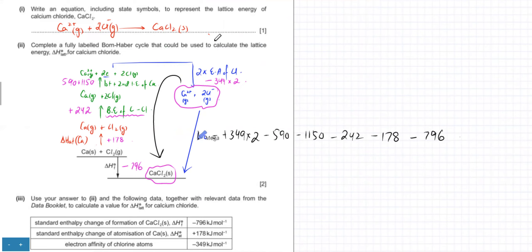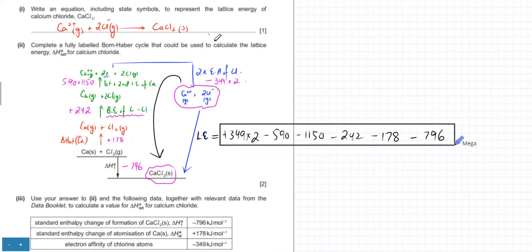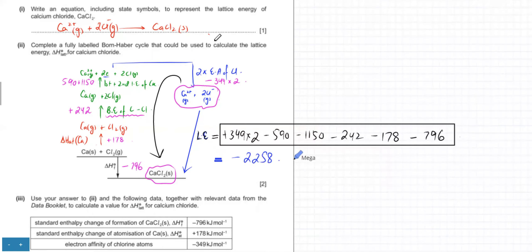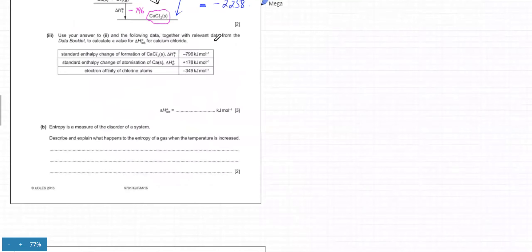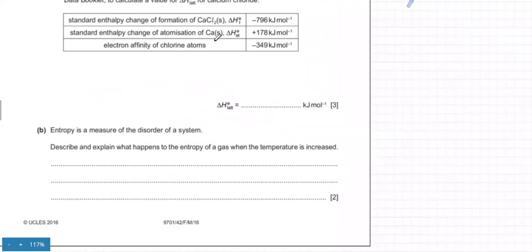Calculate the expression carefully, being very careful with the calculator when entering numbers. The answer is −2258 kJ/mol. This is from paper M16/42.